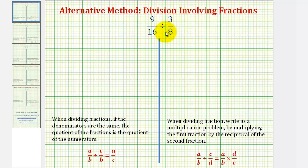So for the alternative method, we first want to obtain a common denominator. The least common multiple of 8 and 16 would be 16. So we'll multiply 3/8 by 2/2. So we have 9/16 divided by 3/8, which we'll multiply by 2/2 to obtain our common denominator. So we have 9/16 divided by 6/16.